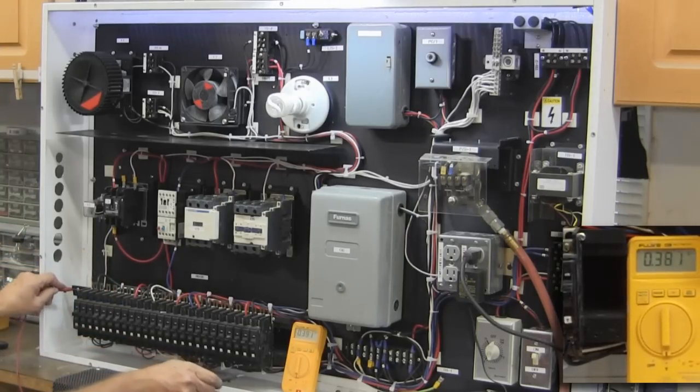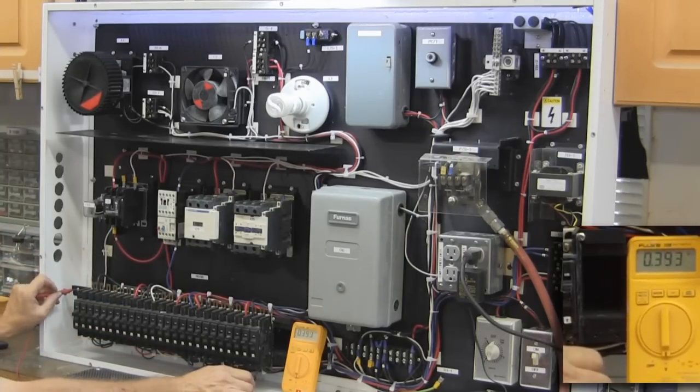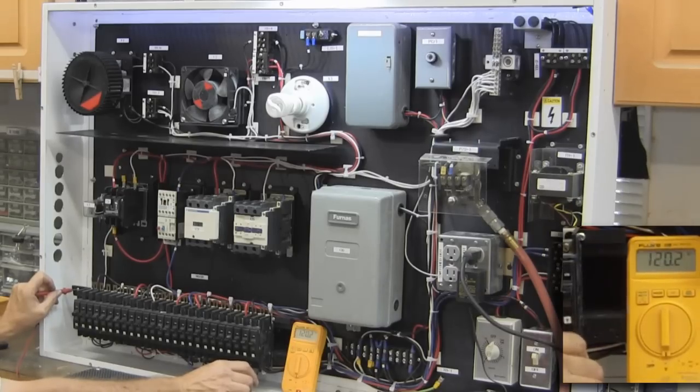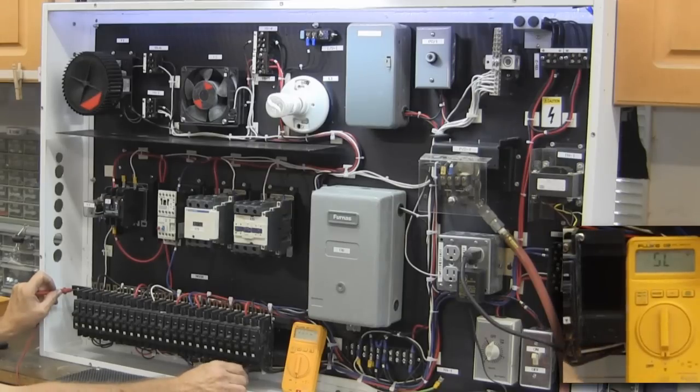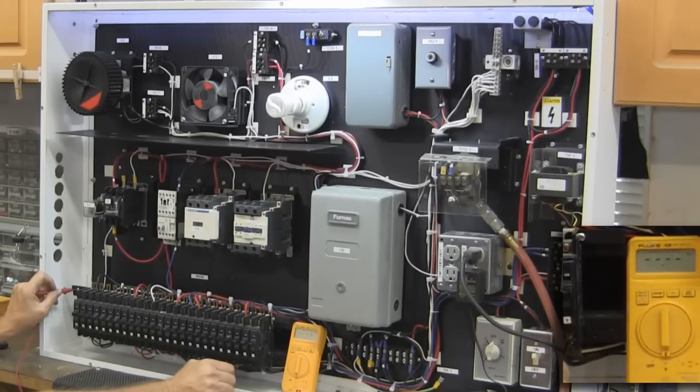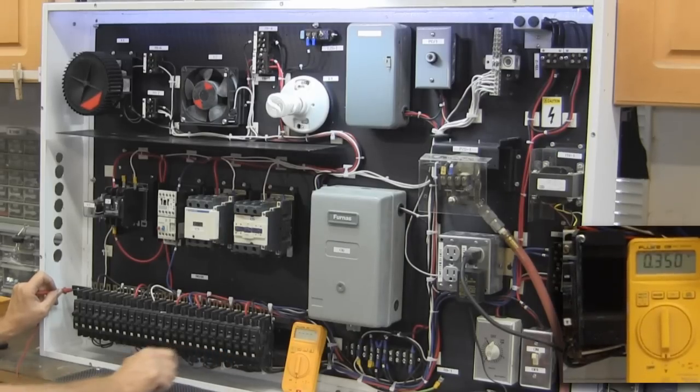Now I'll go down below here to the line side of these and I'll check. There I've got 120 on the Y, 120 on the X, nothing on W. And then just on down the line you just run through and you can test your voltages.